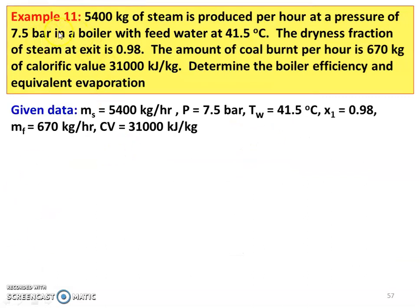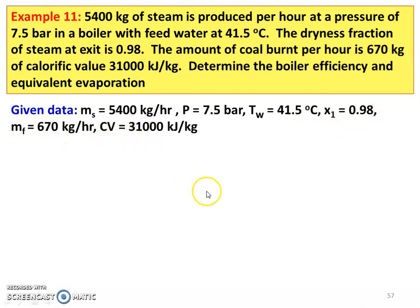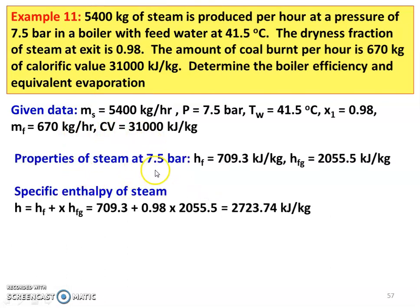The next question: 5,400 kg of steam is produced per hour at a pressure of 7.5 bar in a boiler, with feed water at 41.5 degrees Celsius. The dryness fraction of the steam at exit is 0.98. The amount of coal burnt per hour is 670 kg and the calorific value is 31,000 kJ per kg. Determine boiler efficiency and equivalent evaporation. Given data: mass of steam produced 5,400 kg per hour, pressure 7.5 bar, water temperature 41.5 degrees Celsius, dryness fraction 0.98, mass of fuel 670 kg per hour, calorific value 31,000 kJ per kg. Properties of steam at 7.5 bar: hF equals 709.3 kJ per kg, hFG equals 2055.5 kJ per kg.